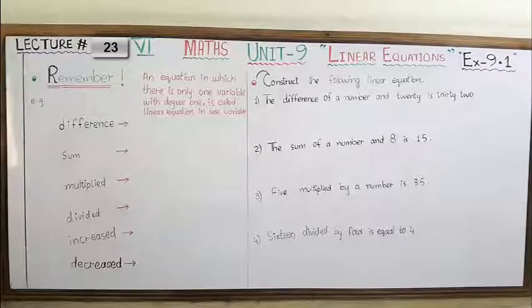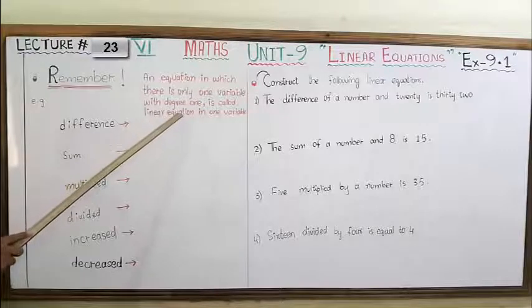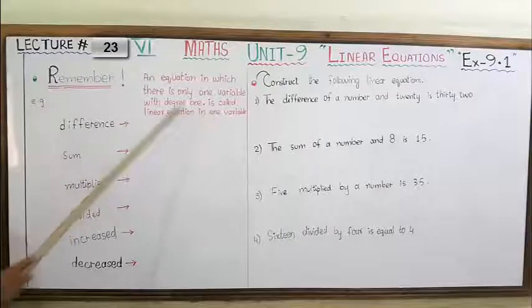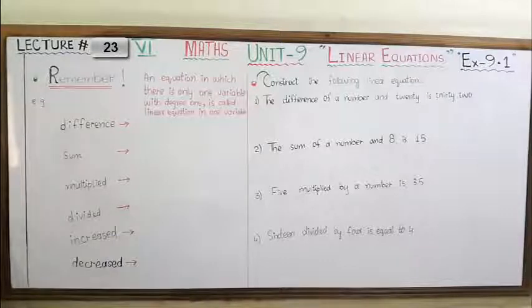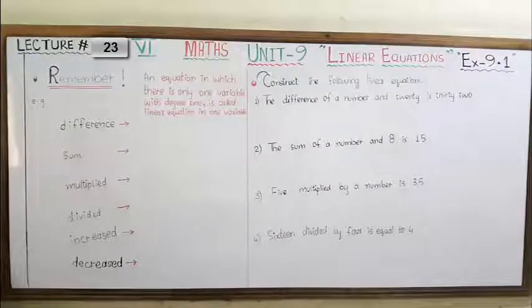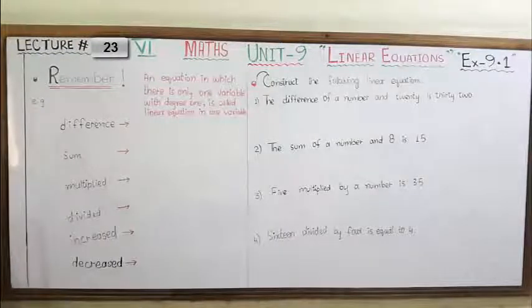Dear students, remember what a Linear Equation is? An equation in which there is only one variable with degree 1 is called a Linear Equation in one variable. Aap previous classes ke andar sikh chuke hain ke variable kise kehte hain. Aaj hum Linear Equation seekh rahe hain — ek equation jisme sirf one variable use ho. Variable koi bhi English alphabetical letter hota hai, aur commonly X, Y, Z use karte hain. Degree ke baare mein bhi aapne padha hai.